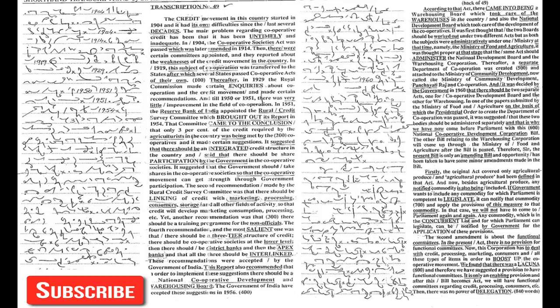If government wants to include any commodity for which Parliament is competent to legislate, it can notify that commodity and apply the provisions of this measure to that commodity. In that case we will not have to come to Parliament again and again. Any commodity which is in the concurrent list and for which Parliament can legislate can be notified by government for the application of these provisions.